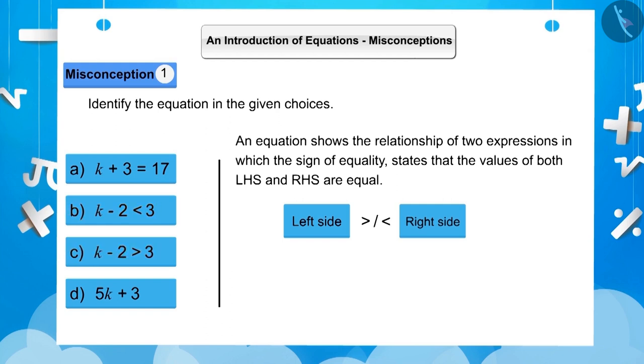Here, option B shows that the value of left side is less than the right side, while option C shows that the value of the left side is more than the right side.